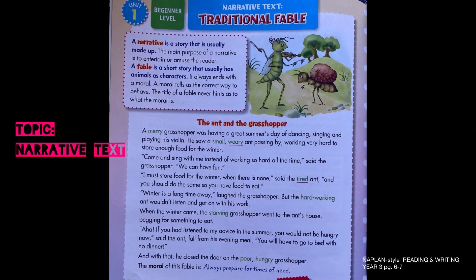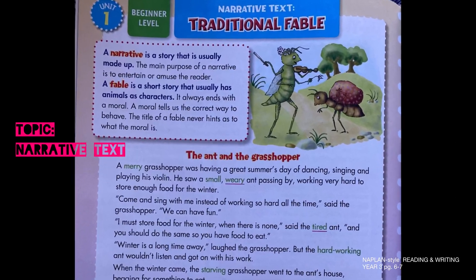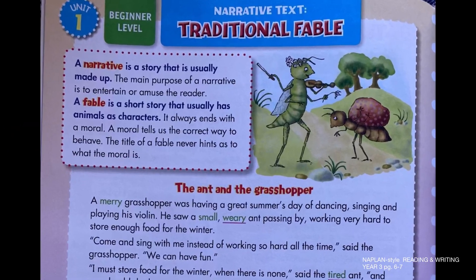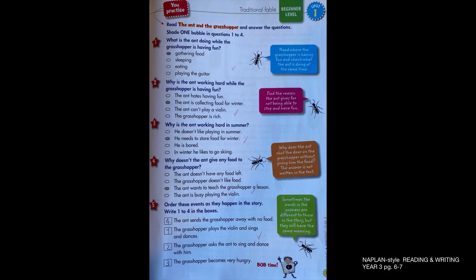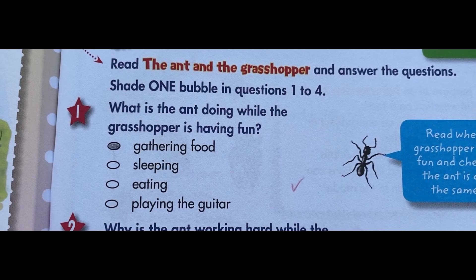A narrative is a made-up story that is used to entertain the reader. A fable is a short story that usually has animals as characters. It always ends with a moral, which tells us the right way to behave.